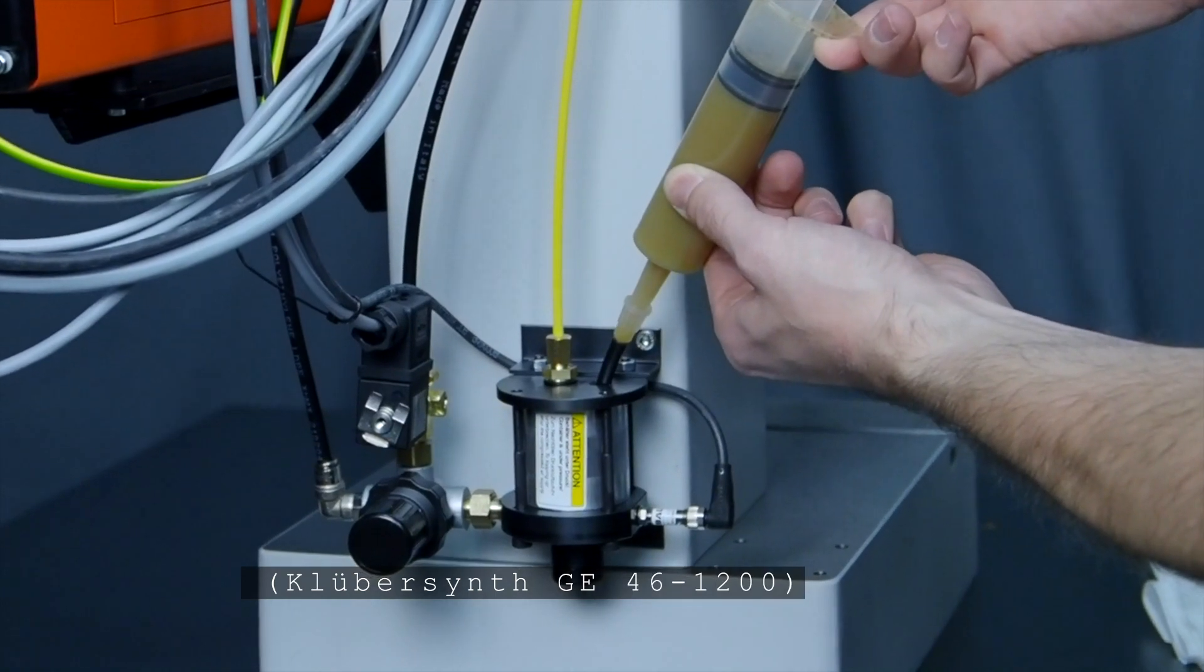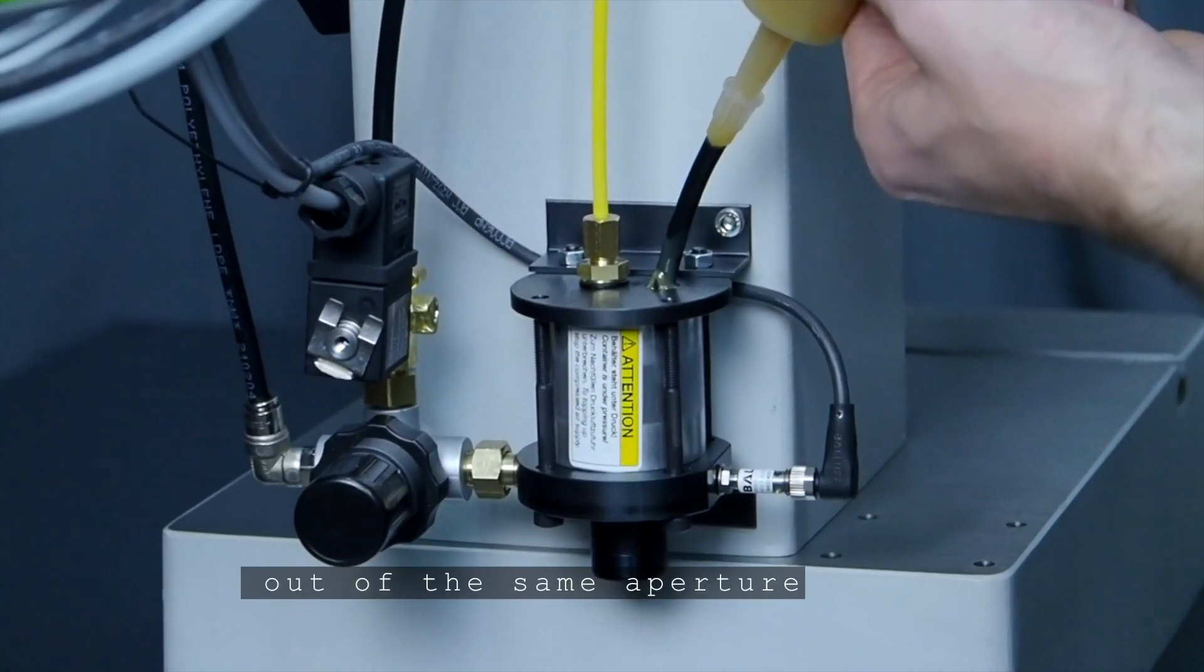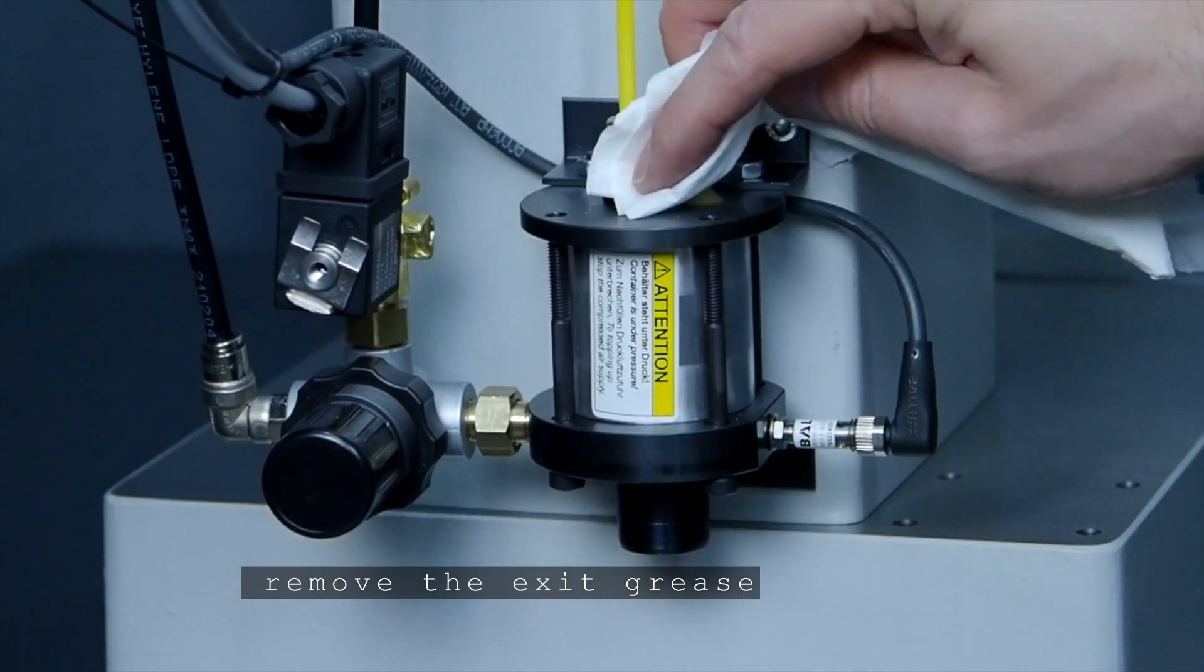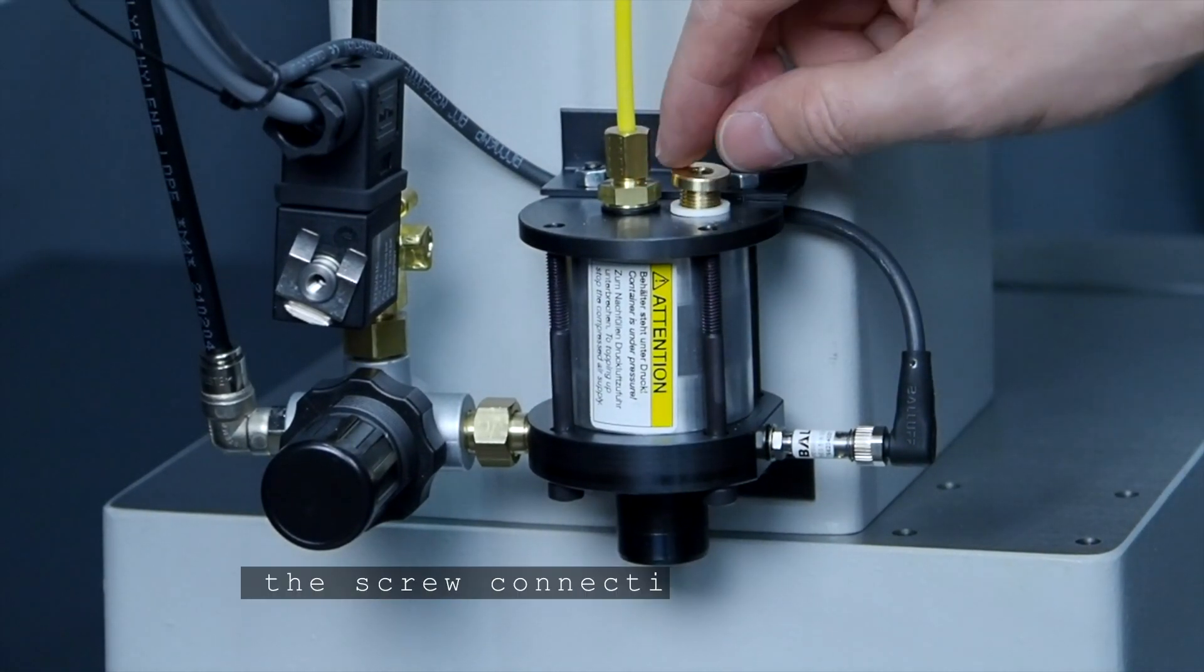Slowly top up with grease until it starts to come back out of the same aperture. Remove the excess grease and mount the plug screw again.